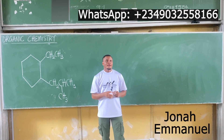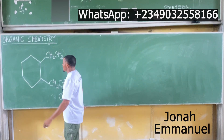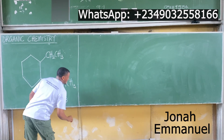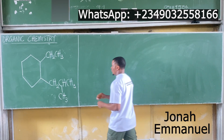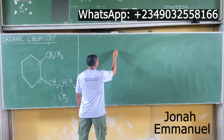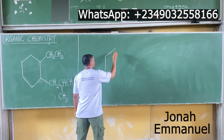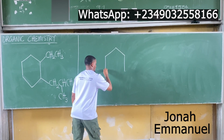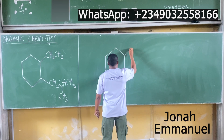All right, let's look at this. We're dealing with primary, secondary, and tertiary carbons as well as hydrogens. The task is always very simple: draw out the full structure. This molecule here is a cyclohexane.